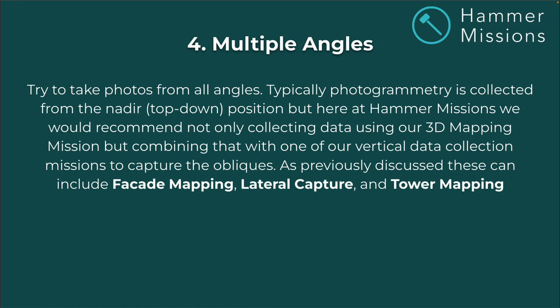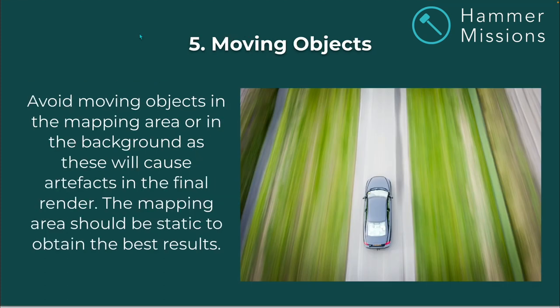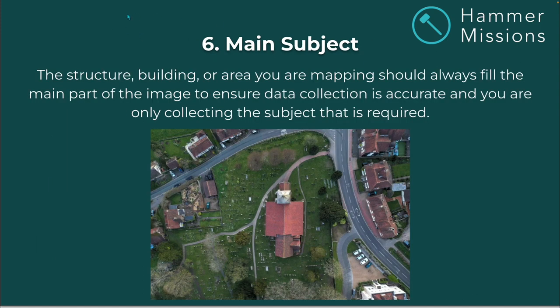Those vertical missions can include facade, lateral, and tower mapping, as previously demoed. Moving objects: avoid moving objects in the mapping area or in the background, as these will cause artifacts in the final render. The mapping area should be static to obtain the best results. Main subject: the structure, building, or area you're mapping should always fill the main part of the image to ensure accurate data collection of only the required subject.